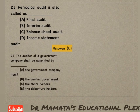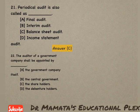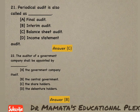Next: The auditor of a government company shall be appointed by — the government company itself, the central government, the shareholders, or the debenture holders? Government company ka jo auditor hai uska appointment kaun karta hai? Government company ke auditor ka appointment central government karti hai. Option B is the correct answer.